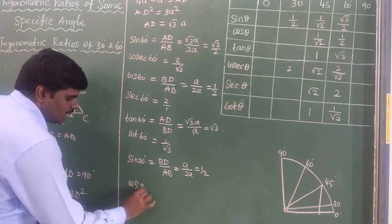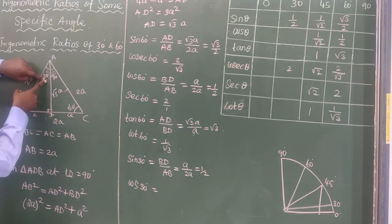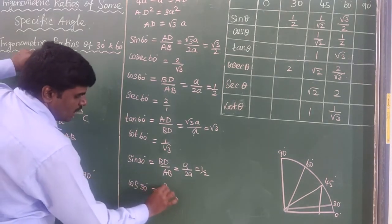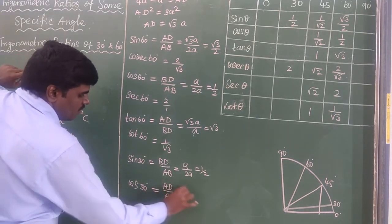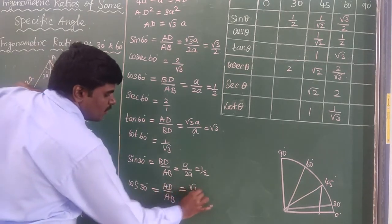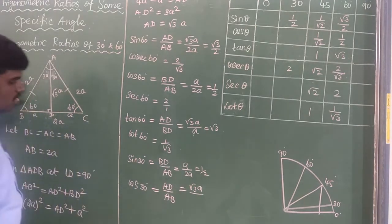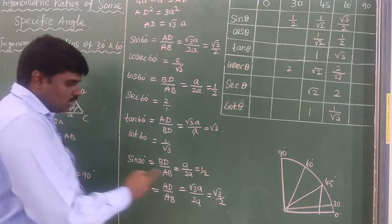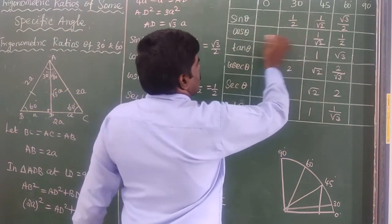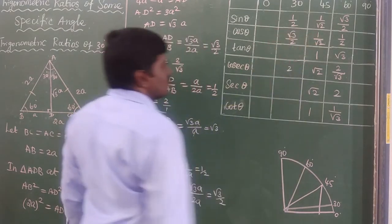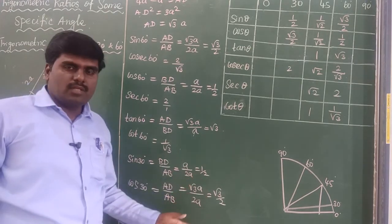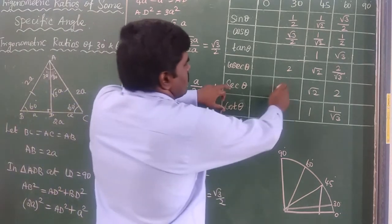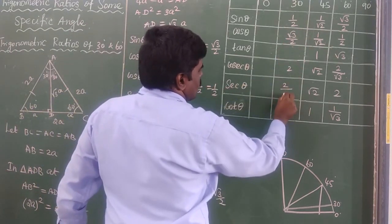For cos 30°, we use adjacent side divided by hypotenuse. The adjacent side is AD = √3·A and the hypotenuse is AB = 2A. So cos 30° = √3·A / 2A = √3/2. Therefore cos 30° = √3/2, and sec 30° is the reciprocal, giving sec 30° = 2/√3.